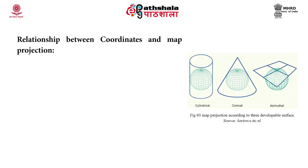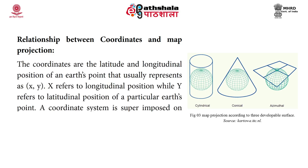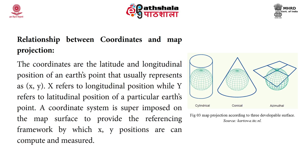Now let us look into the relationship between coordinates and map projection. Coordinates are the latitude and longitudinal positions of an Earth point, usually represented as X and Y, where X refers to the longitudinal position and Y refers to the latitudinal position. A coordinate system is superimposed on the map surface to provide a referencing framework by which X and Y positions can be computed and measured.